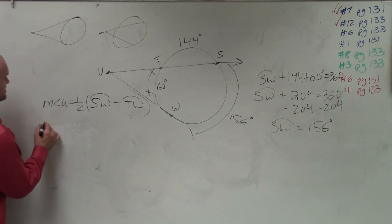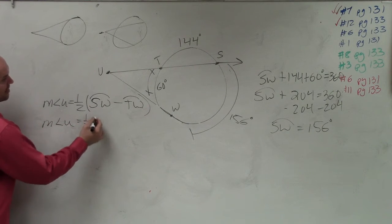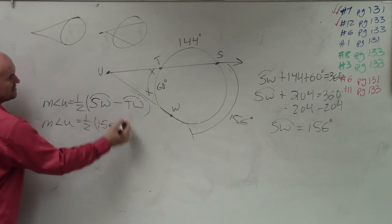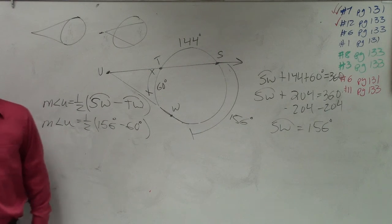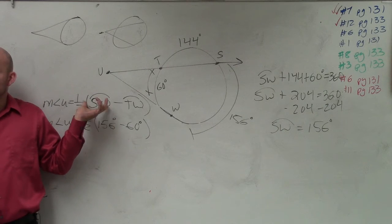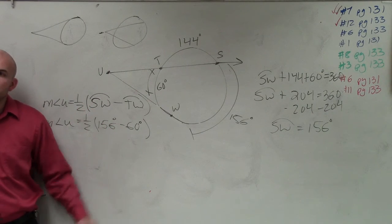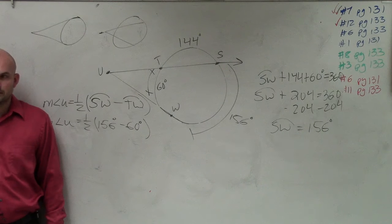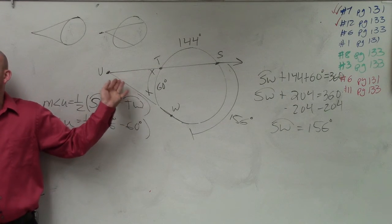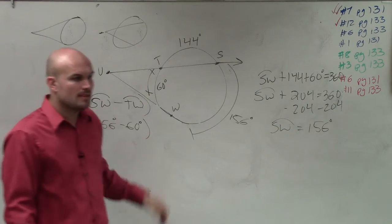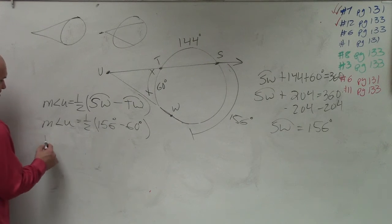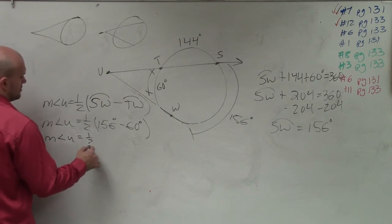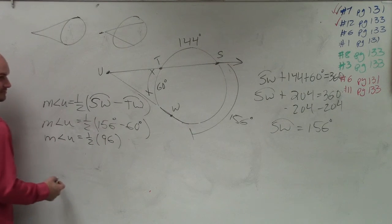Now, all I simply do is plug in my information. SW is 156 minus TW, which is 60. That's the formula, so that's what we have to use — I'm just plugging in the measure of the arcs. We're not trying to find SW; we're trying to find the measure of angle U. So 156 minus 60 is 96, and one half of 96 is 48.